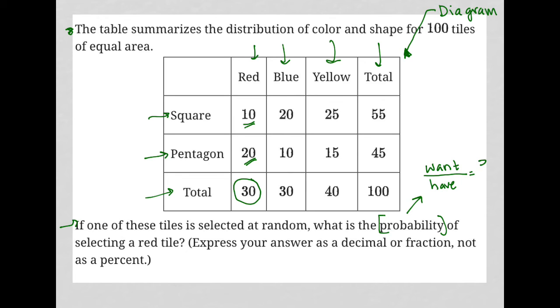I'm going to say what I want. Well, there's 30 opportunities to get what I want. And then what do I have? I'm choosing from all of the total tiles, which here says that number should be 100. So there's my probability: 30 over 100.